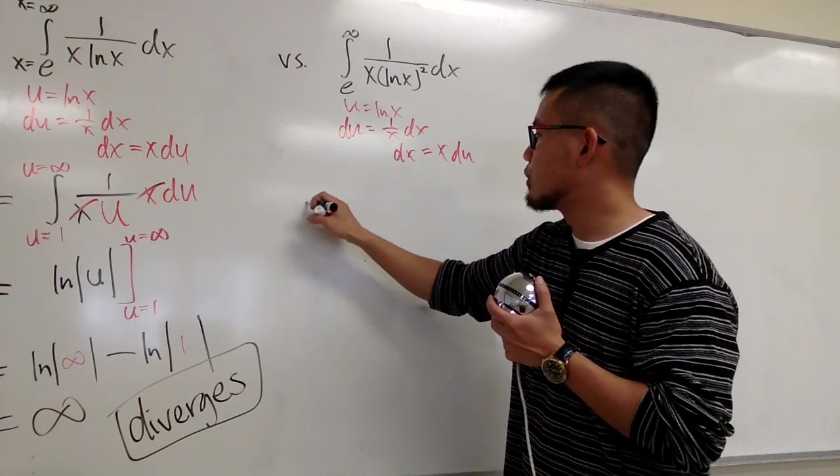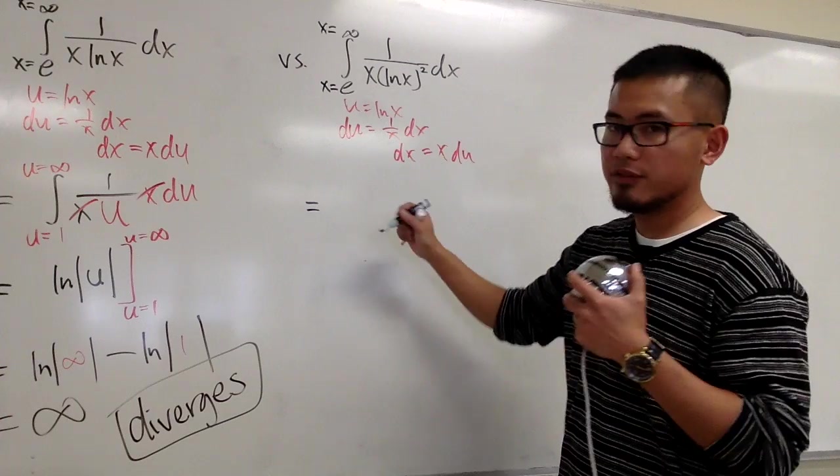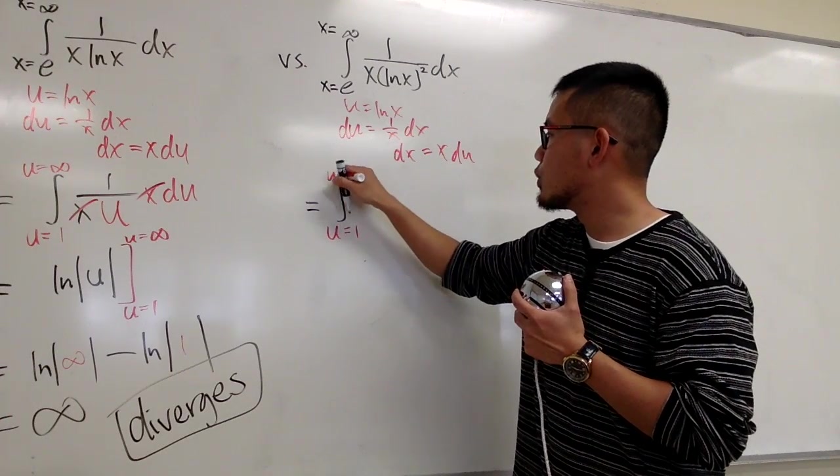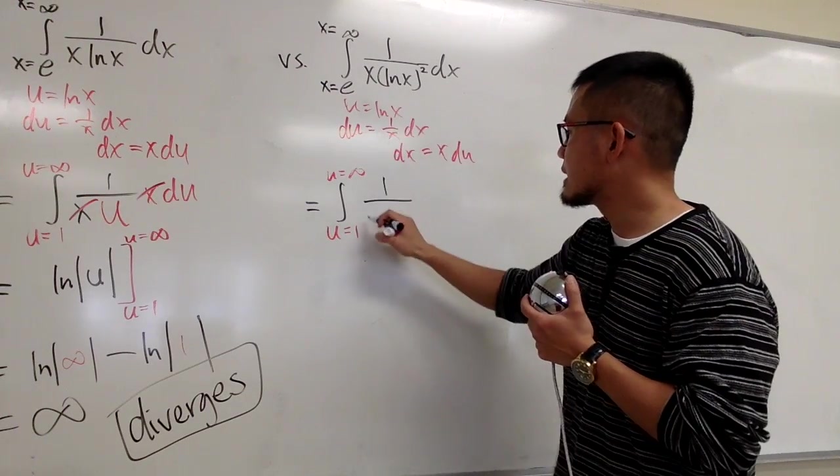Everything is pretty much the same from there. And you will see this is going to be, x is going from e to infinity. But if you change that into u world, u will be going from 1 to infinity, just like that.